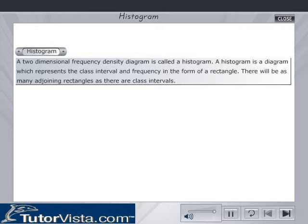A two-dimensional frequency density diagram is called a histogram. A histogram is a diagram which represents the class interval and frequency in the form of a rectangle. There will be as many adjoining rectangles as there are class intervals.